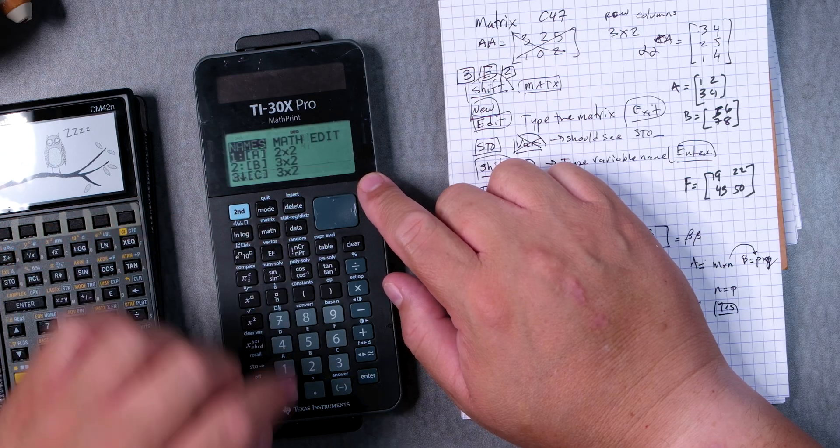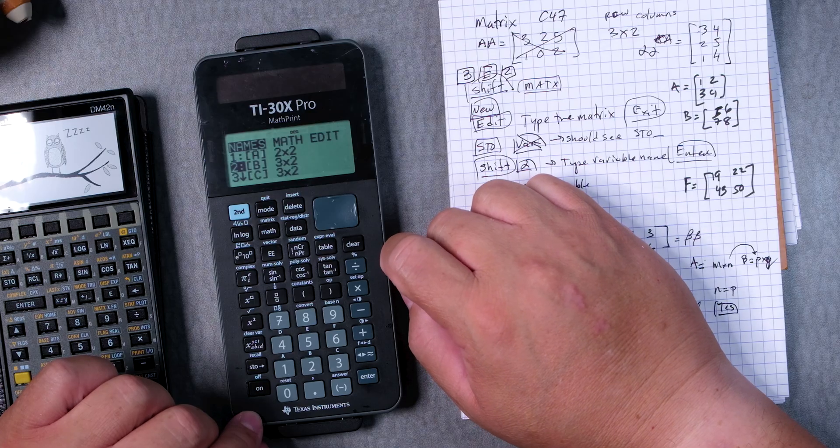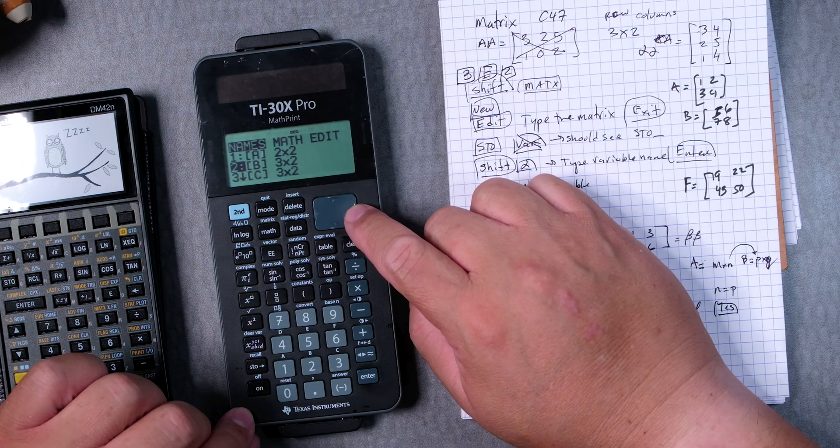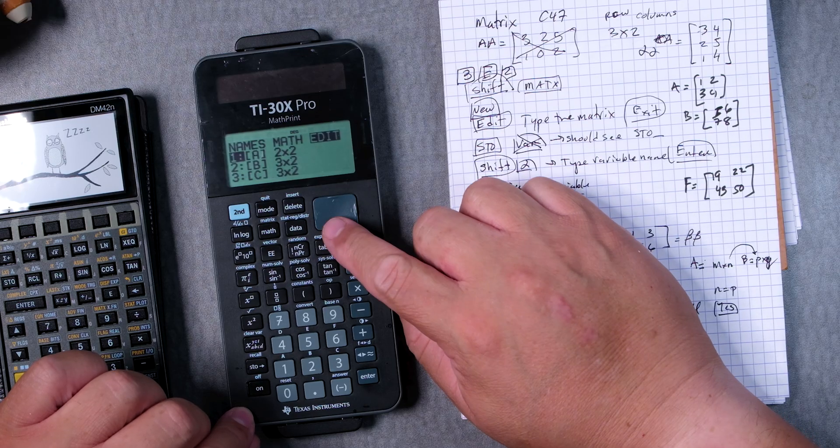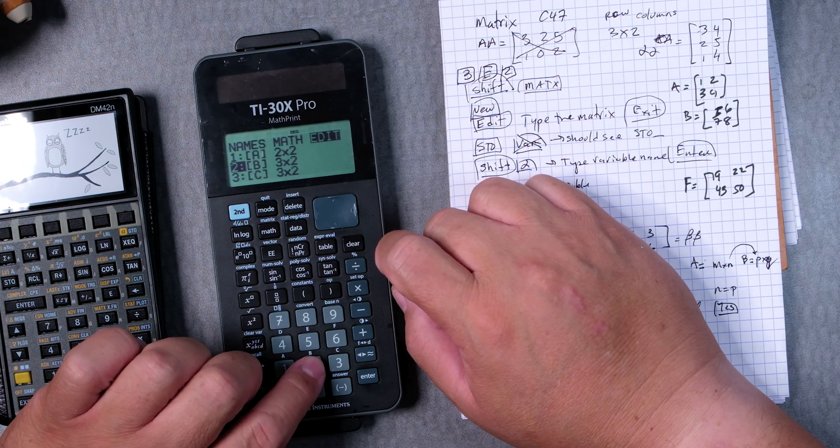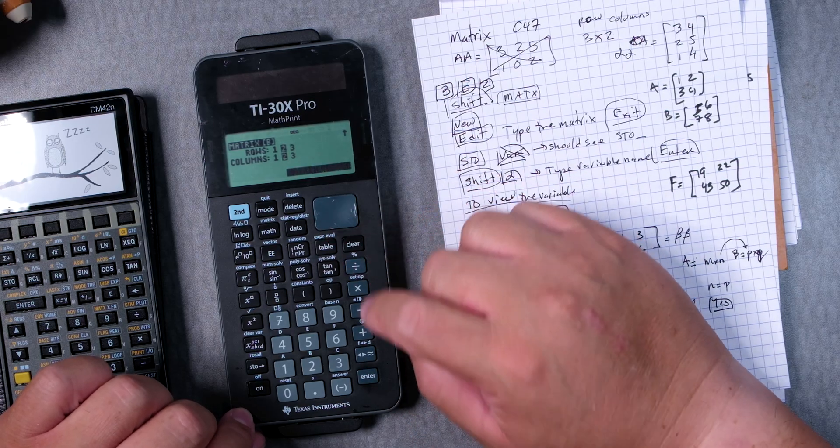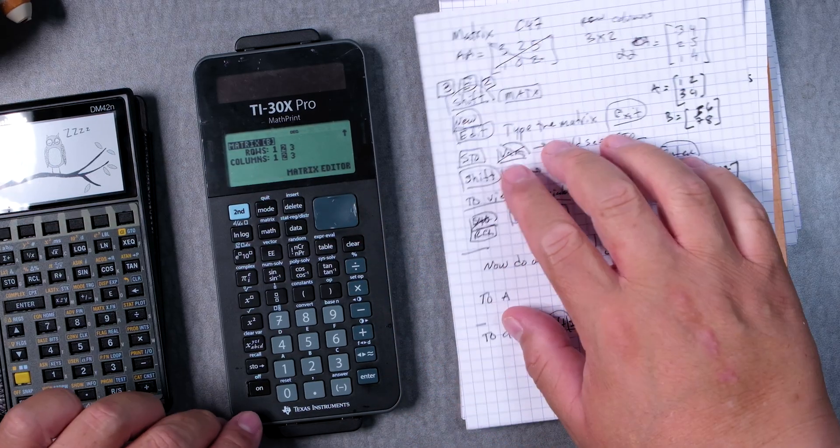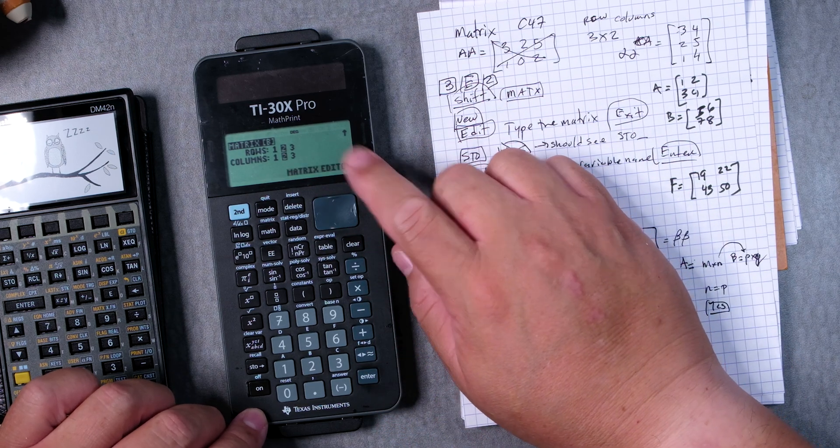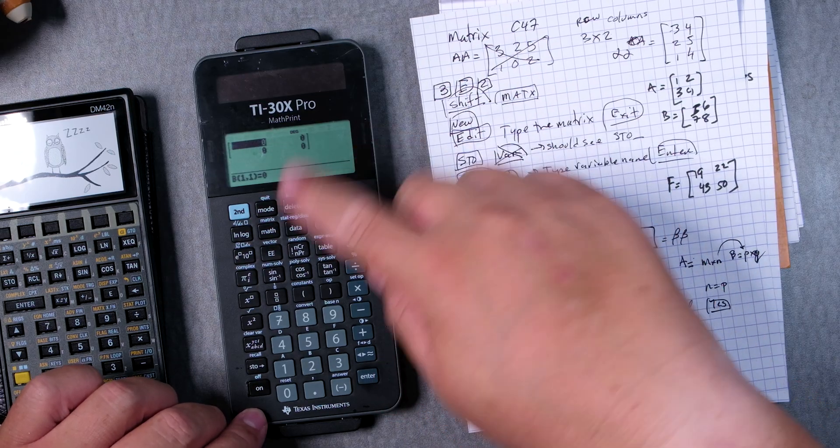Let's go to second matrix. Let's go to number two, B, the B matrix. Now it says three by two but we want two by two so we're going to go edit. We're going to go to the second one. I'm sure you can press two and there you go. Then we want to enter two by two. Make sure it says two by two and then matrix editor, enter, gives you a bunch of zeros.